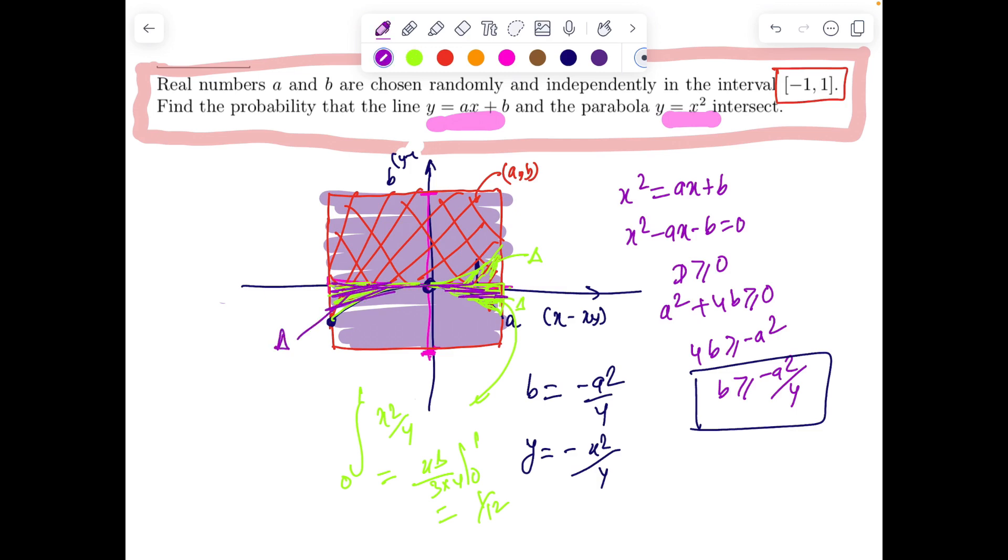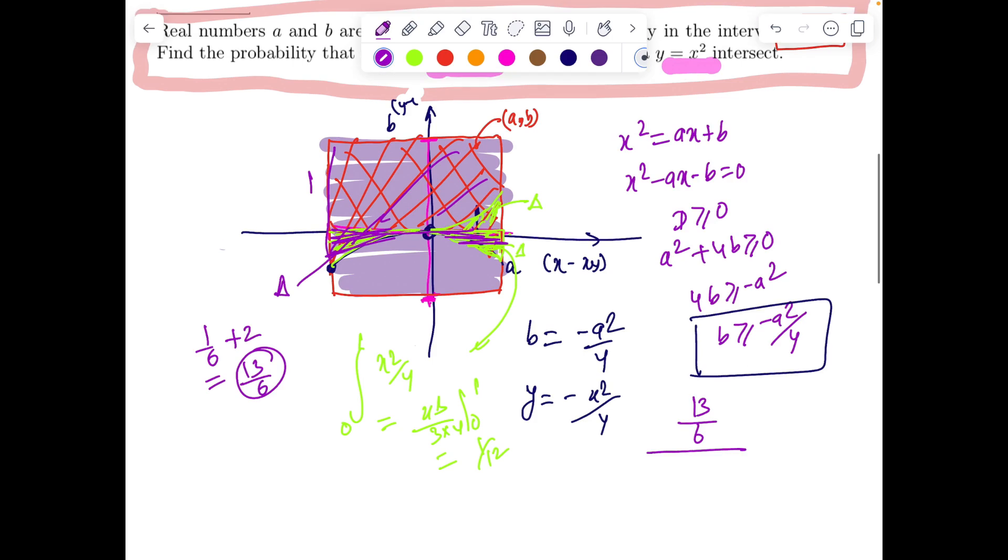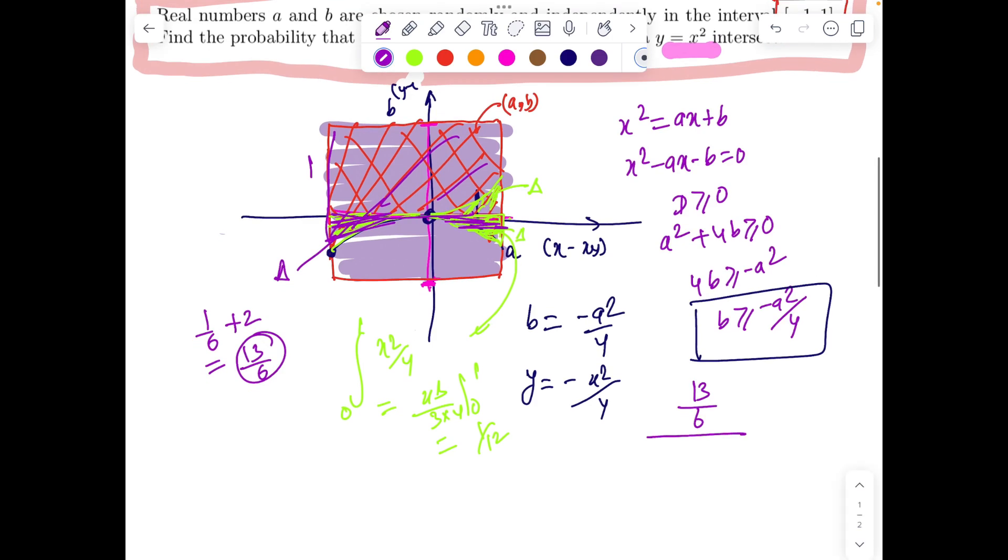So Δ + Δ is 1/6, and then I have to add 1 × 2. So 1/6 + 2 = 13/6. So 13/6 is our desired sample space, the favorable area divided by area of the square, which is going to be 4, which is 2 × 2.